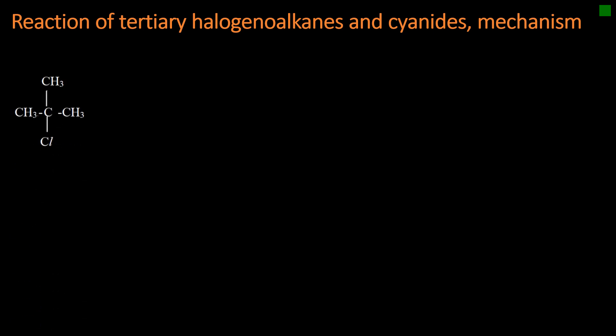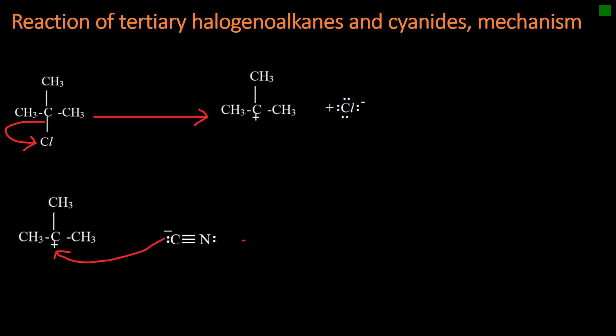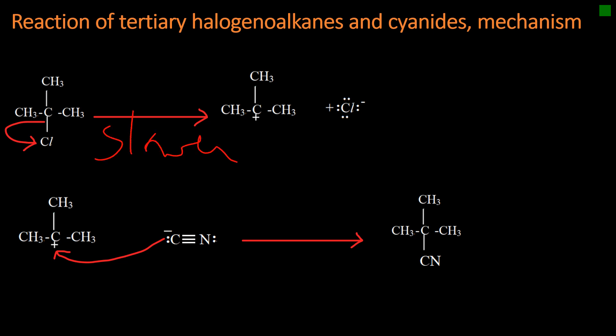The second example is the reaction of a tertiary alkyl chloride with cyanide ions. The tertiary chloride undergoes self-ionization to produce a carbocation and chloride ions. The carbocation attracts electrons from the cyanide group and forms a nitrile molecule. The reaction happens in two steps: the first step is slow while the second step is faster. Because only the substrate is involved in the formation of the carbocation, this is an SN1 reaction, or unimolecular nucleophilic substitution.